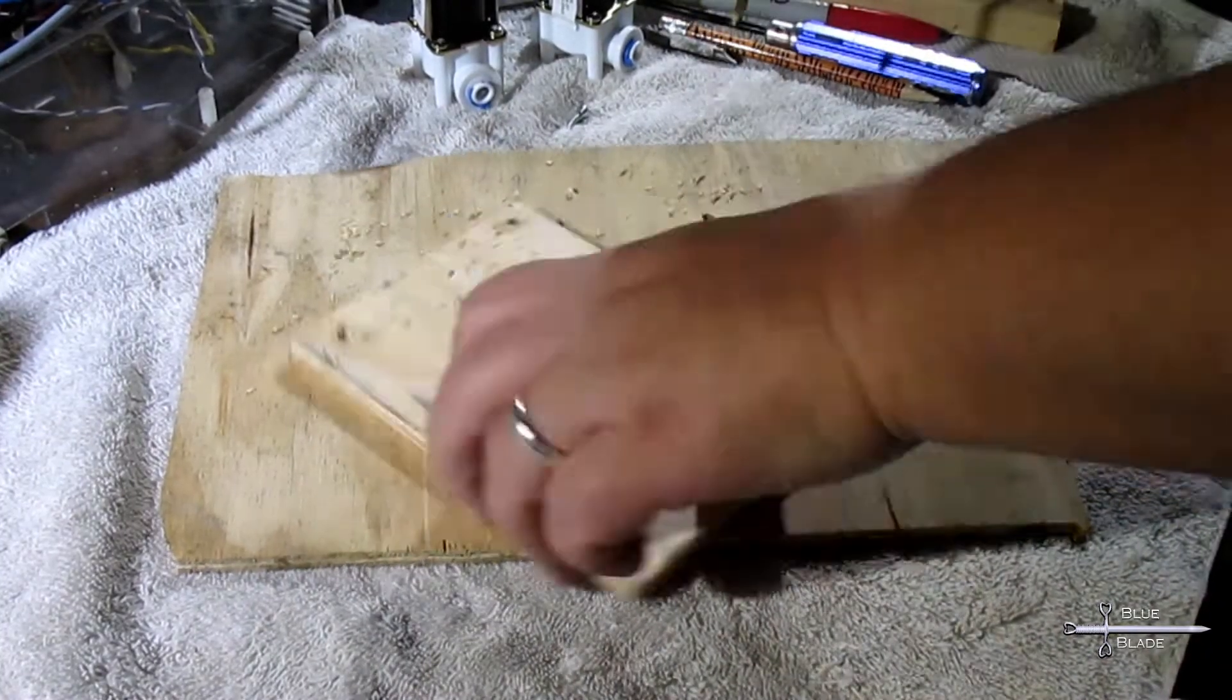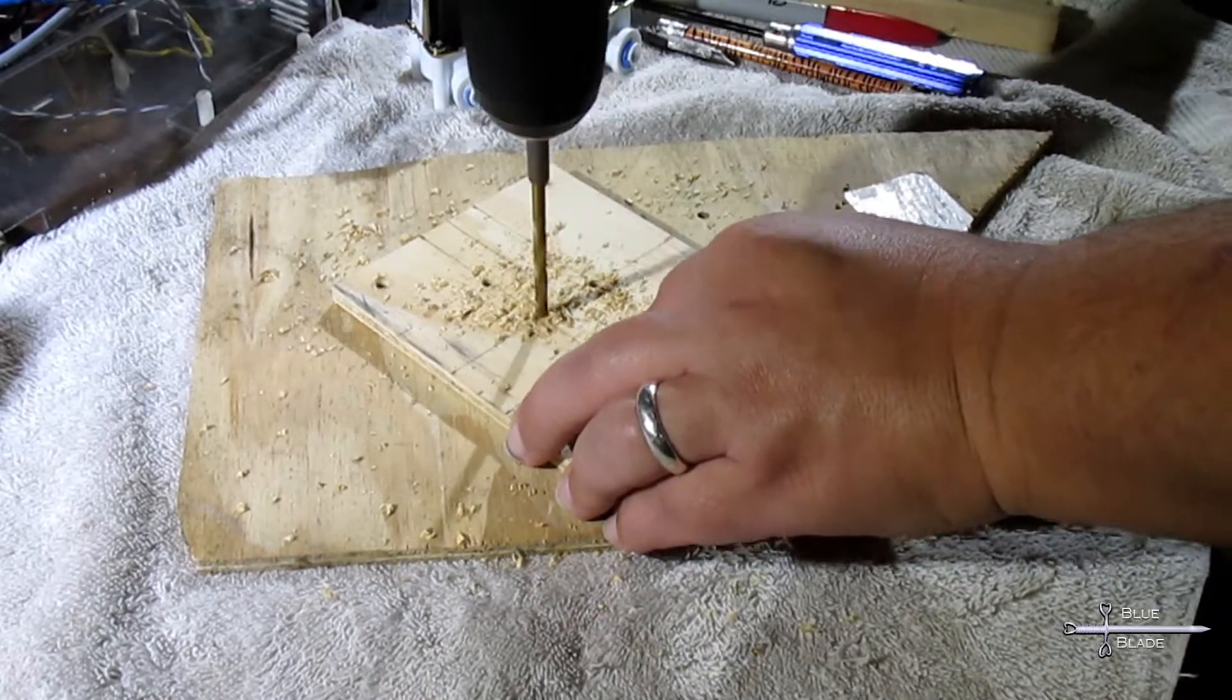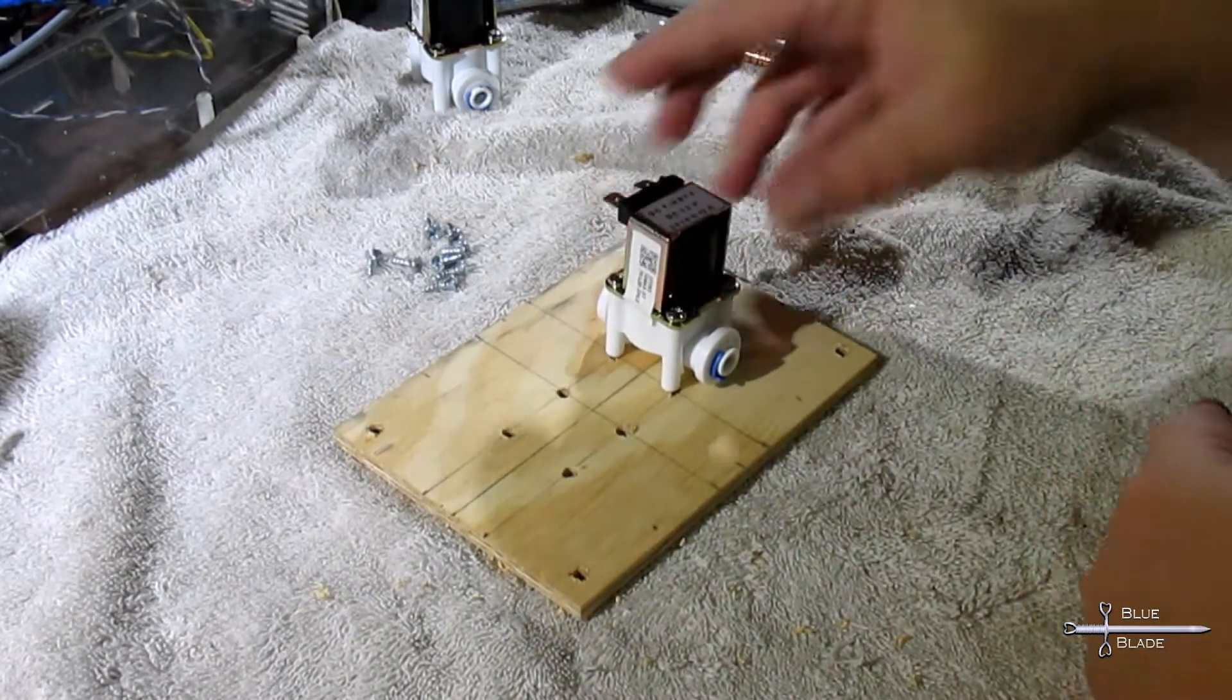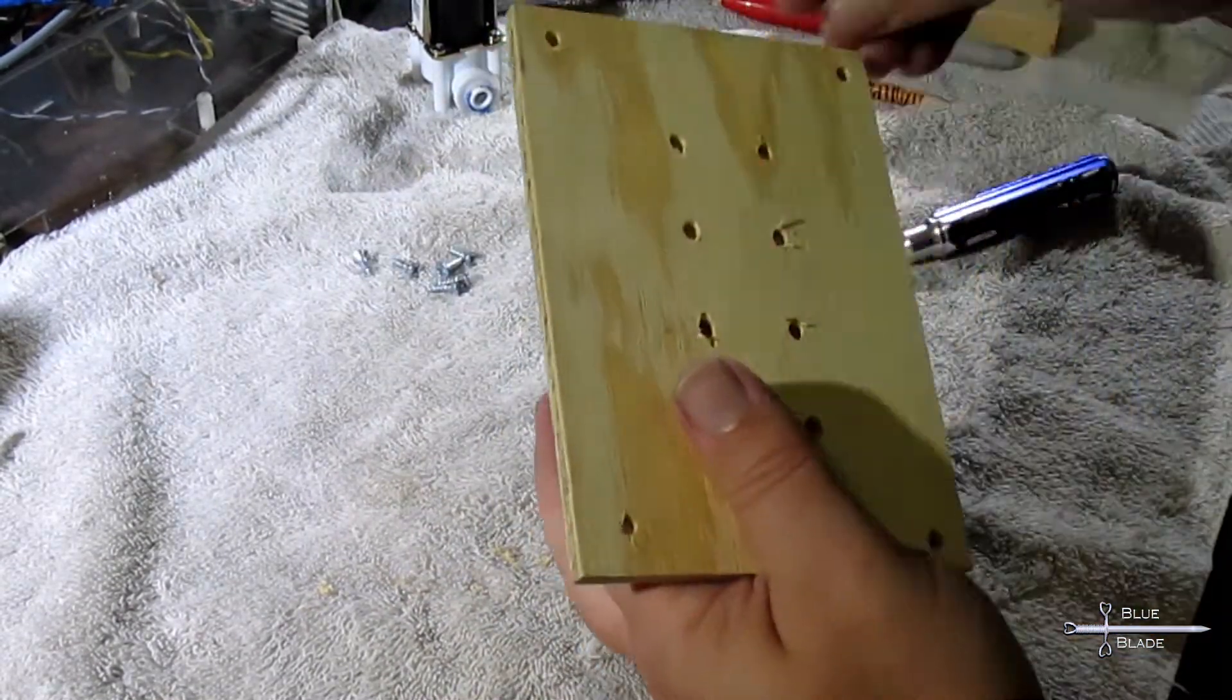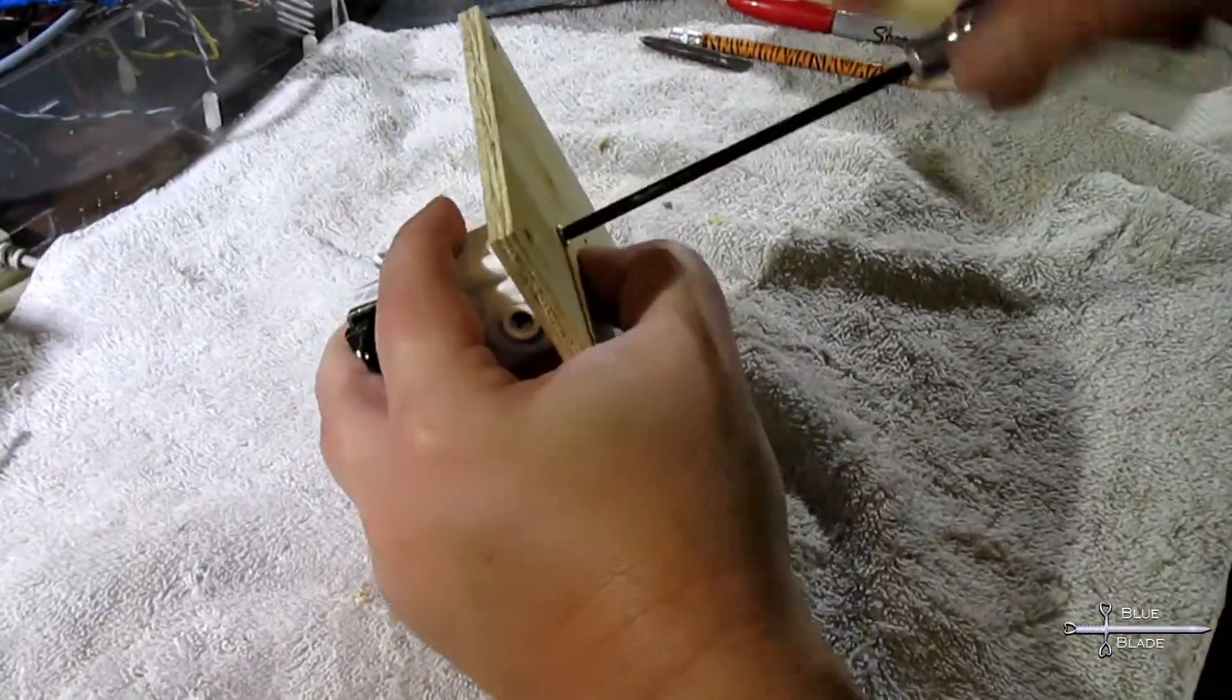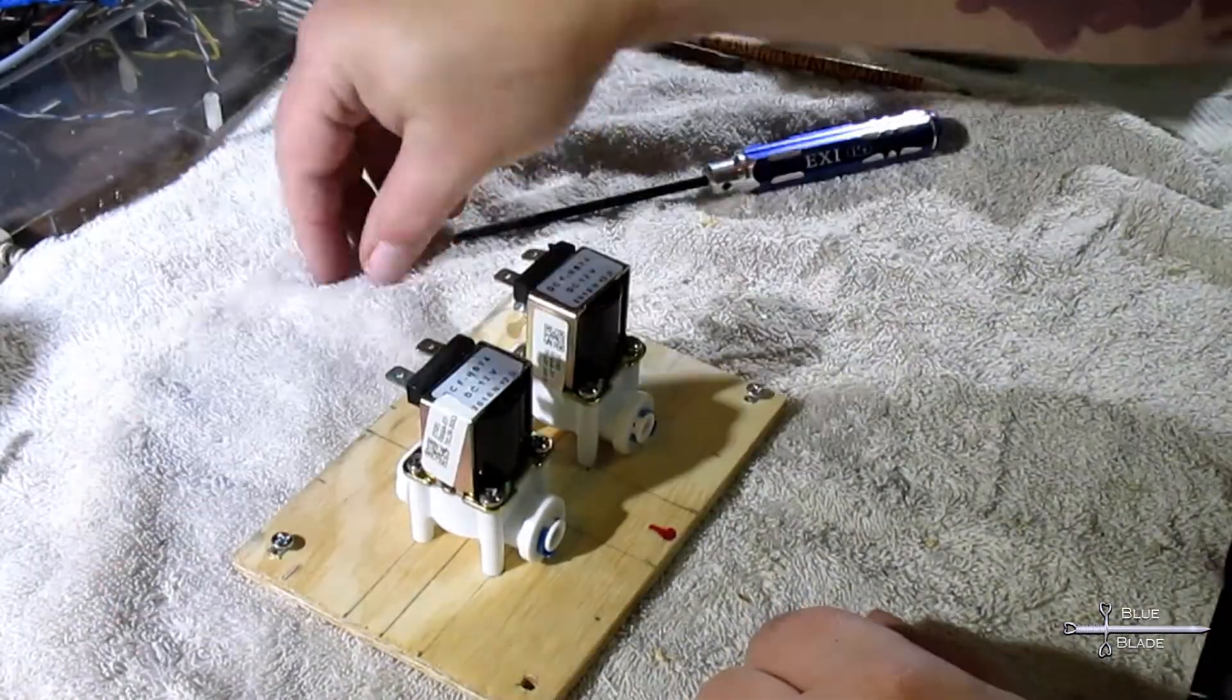Off camera, I trim the board to length on the table saw. Now I use an 1-8-inch bit to drill the mounting holes for the valves and for the bracket itself. Later, I add a few more holes for the cable ties to secure the wiring to the mount. Again, I test fit, this time with screws. This works. I just need a bit of sanding and some paint.